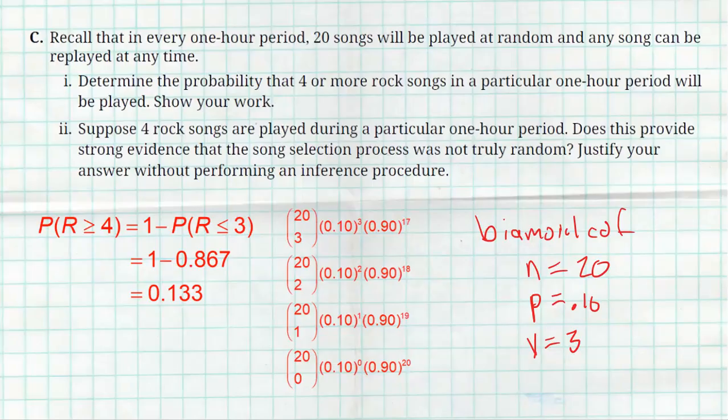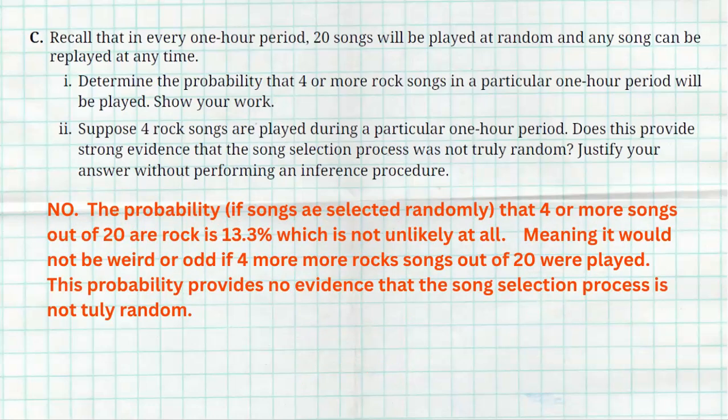Now, the second part of part C says, suppose four rock songs are played during a particular one-hour period. Does this provide evidence that the song selection process was not truly random? Like, would it be weird if four or more rock songs were played? Justify your answer without performing an inference procedure. So I simply said, no, not at all. The probability, if the songs were selected randomly, that four or more songs out of 20 is rock is 13.3%. That's not unlikely at all. The probability of this happening is just not that weird. Meaning it would not be weird or odd if four or more rock songs were played out of 20. So this probability provides no evidence that the song selection process is not truly random.